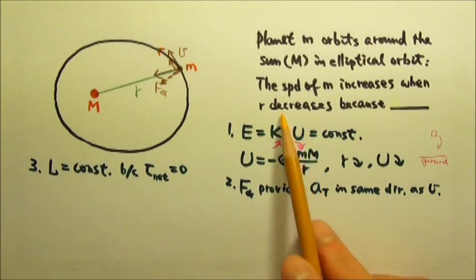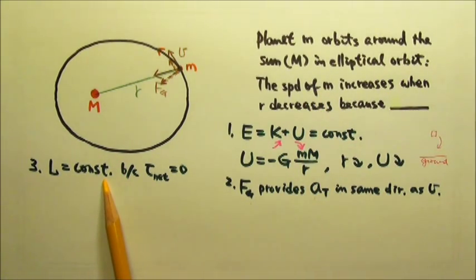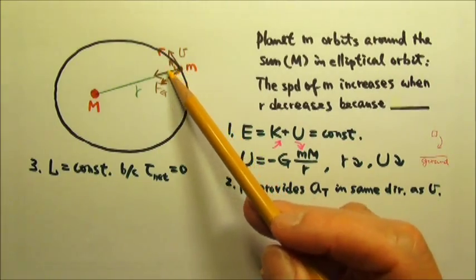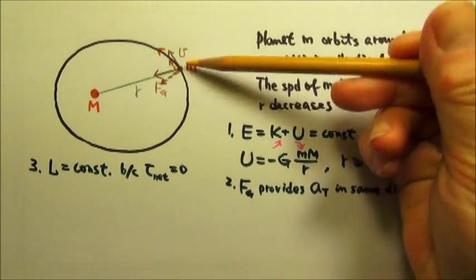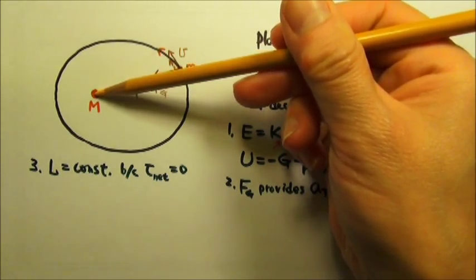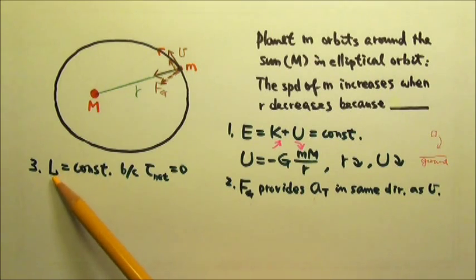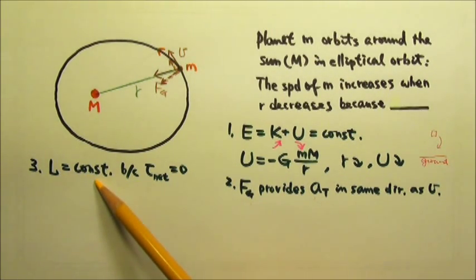Or we can explain the speed increase using conservation of angular momentum. The gravitational force acting on the planet is a central force. The force goes through the center of the planet. So that force gives us no torque. That's why we have conservation of angular momentum.